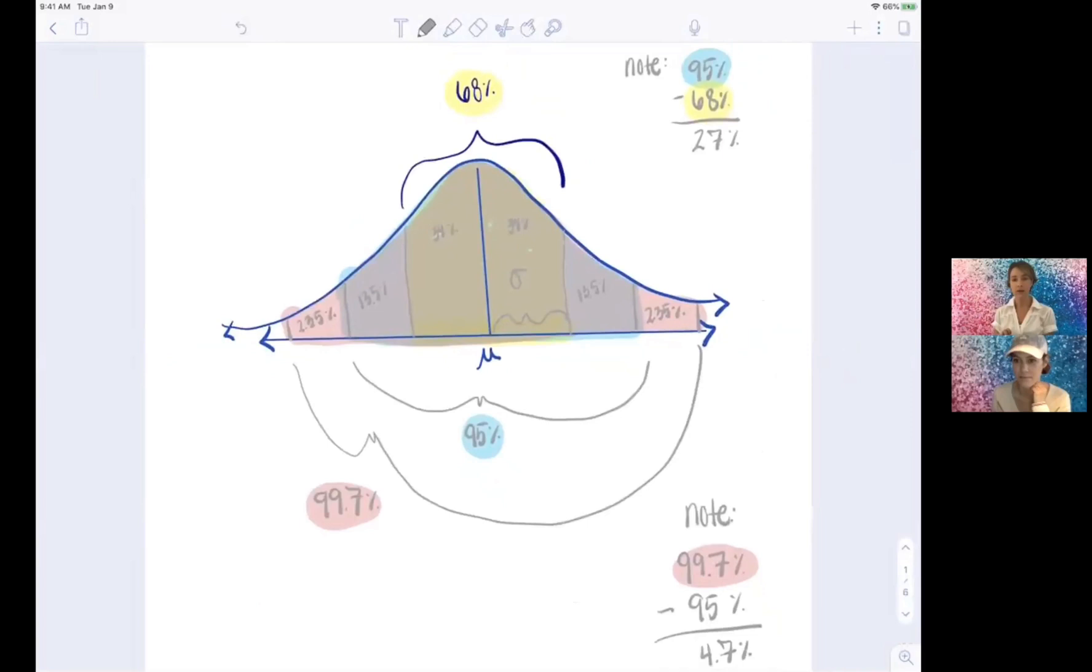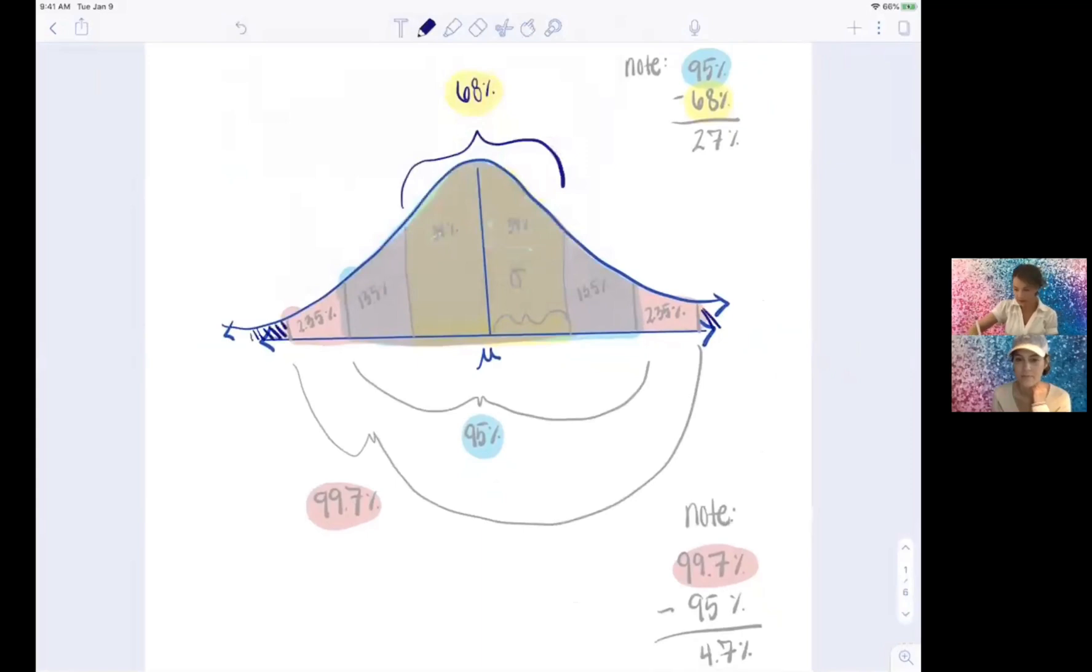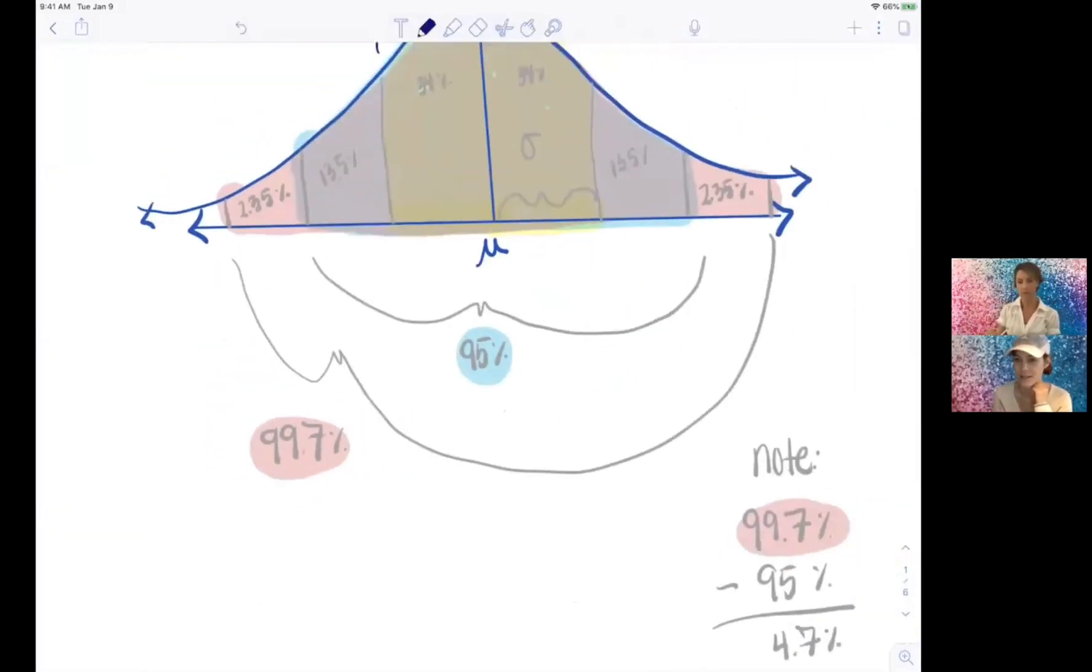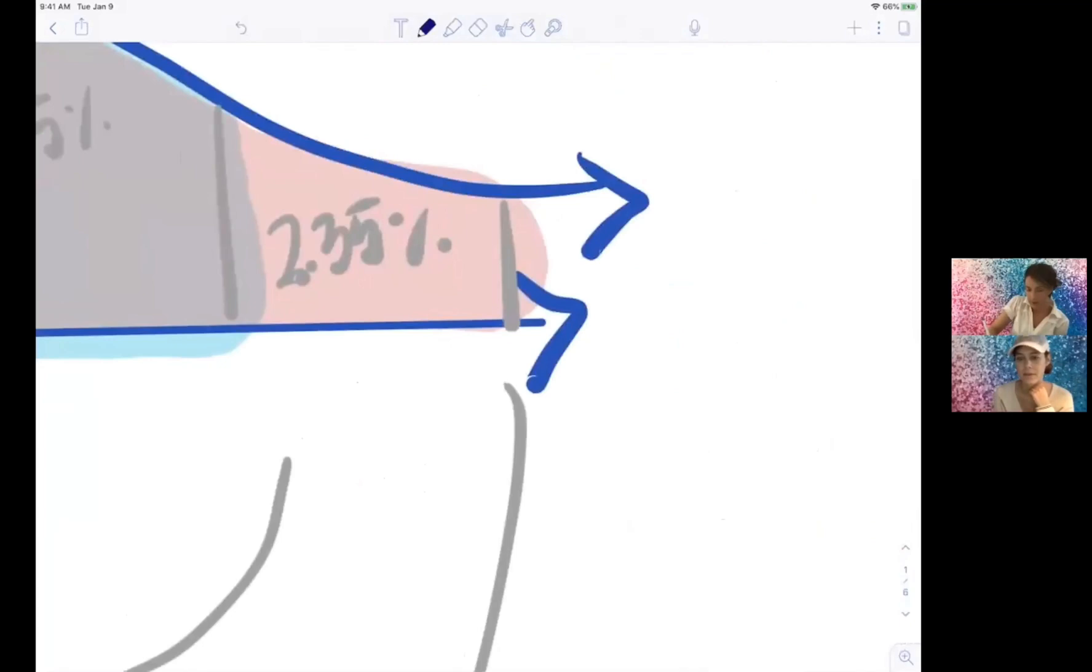Yeah, that information to help us figure out what the area is in these little tails, right. So if we take a hundred percent and we subtract off 99.7 percent, and that's 0.3 percent, dividing that by two, they each get 0.15 percent.